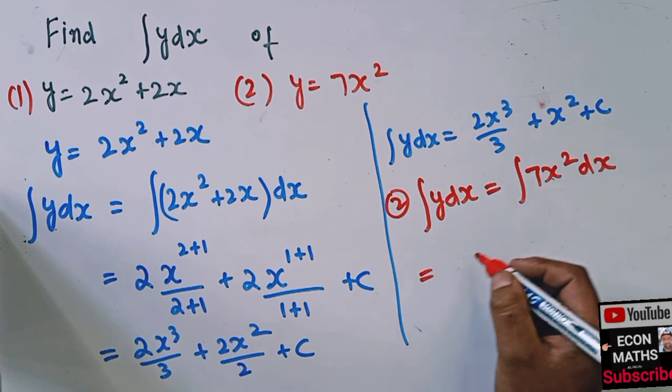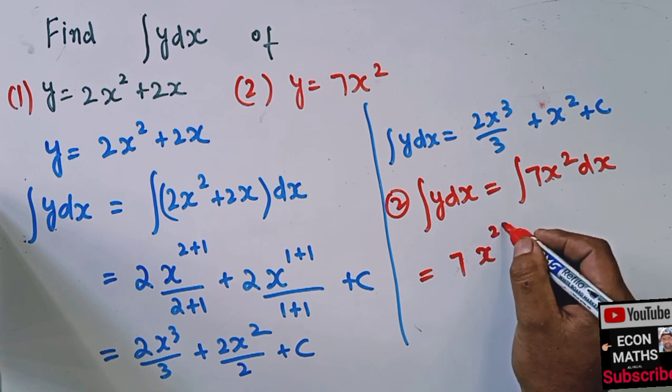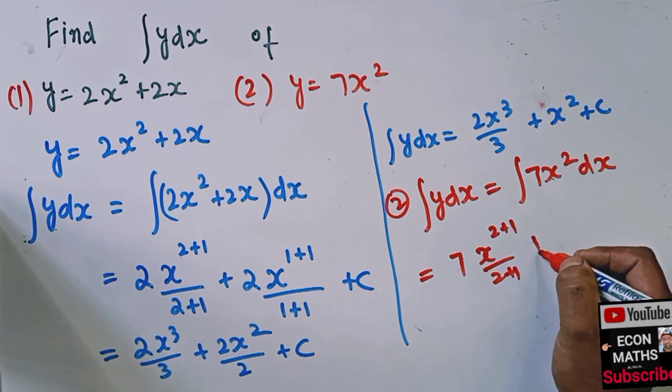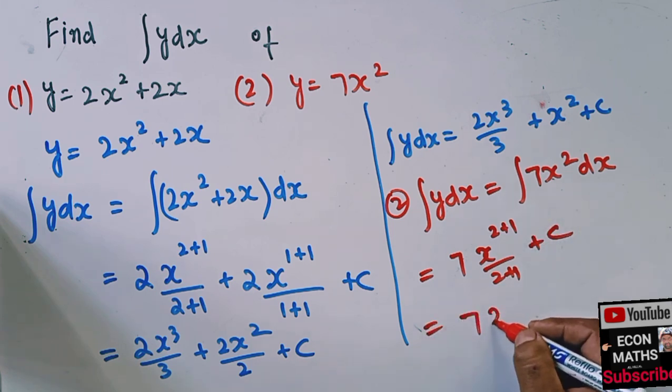We get 7x cubed upon 3 plus c. Okay, I hope I make myself clear. Thank you.